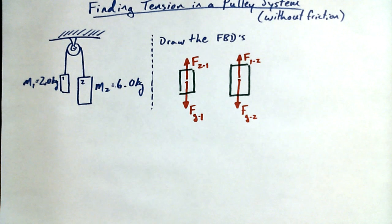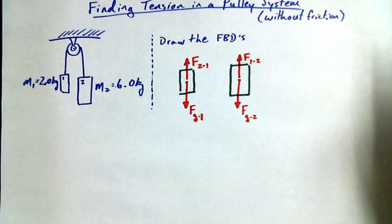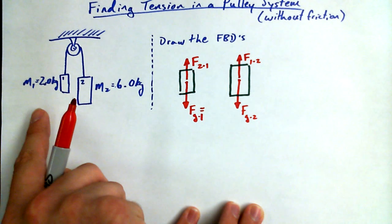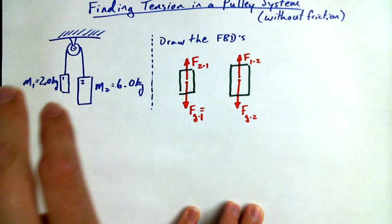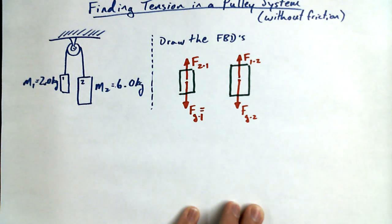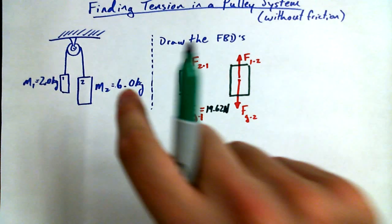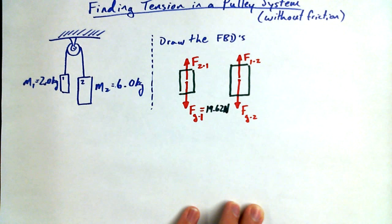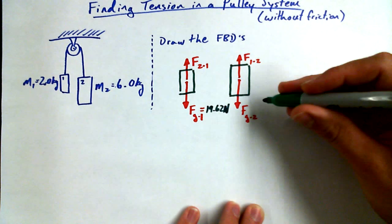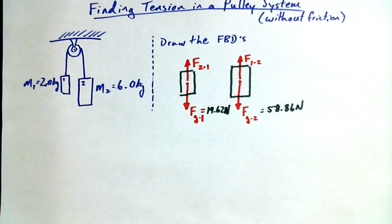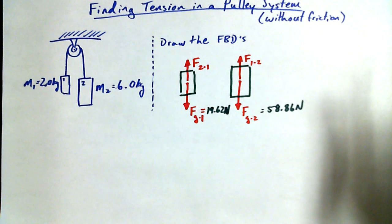FG1 is mass one times 9.81 meters per second squared, or two kilograms times 9.81, which is 19.62 newtons. For mass two, six times 9.81 is 58.86 newtons. We don't yet know what force of one on two or force of two on one is.